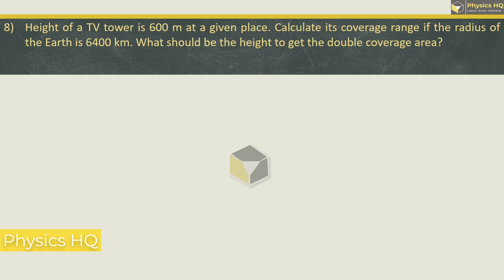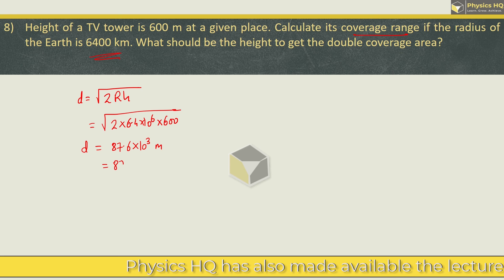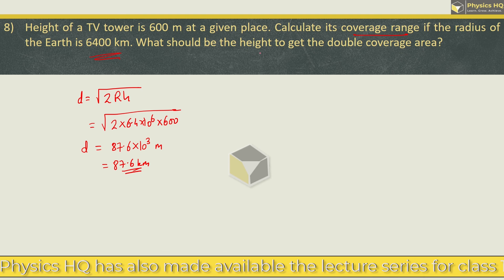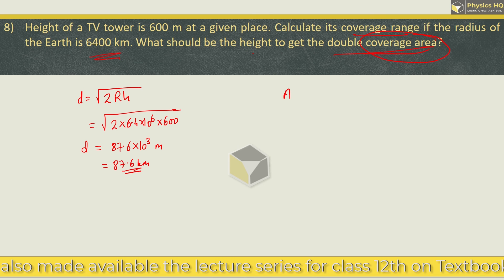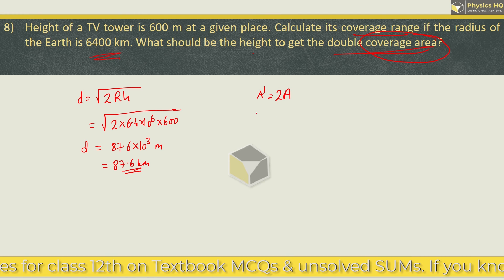I hope you all understood this. Next, height of a TV tower is 600 meter at a given place. Calculate its coverage area if the radius of the earth is 6400 kilometer. What should be the height to get the double coverage area? So coverage range formula is root of 2 times R times H. This is root of 2 times radius of earth 6.4 into 10 raise to 6 meter into height 600. When you solve this, you will get the distance as 87.6 into 10 raise to 3 meter or 87.6 kilometer.